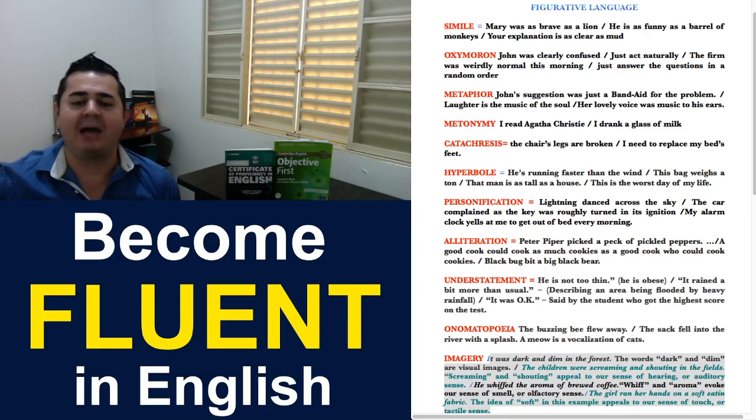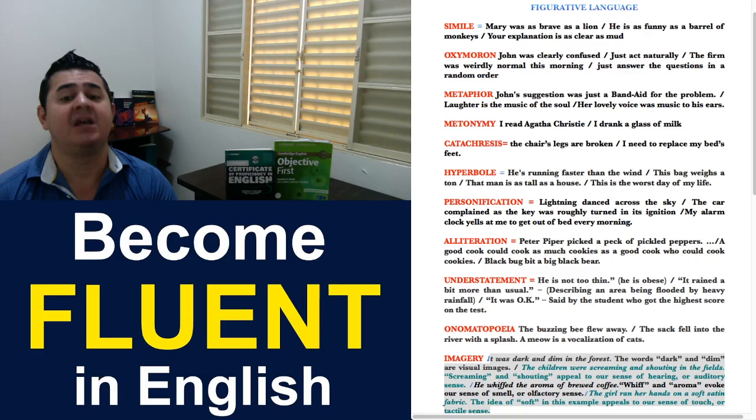And, black bug bit a big black bear. So, again, all the Bs. Black bug bit a big black bear. Six Bs in a row. So, that's what we call alliteration. And that should definitely be avoided in writing.